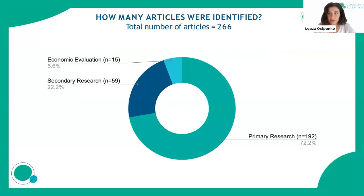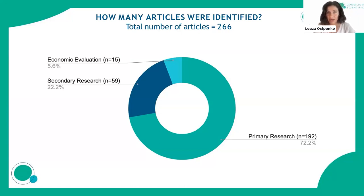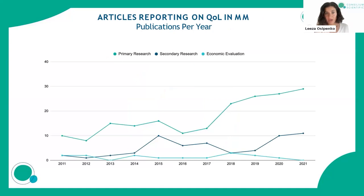In the final analysis we selected 266 articles. Primary research was the highest proportion of articles found. Some published articles started prior to 2011 but were published during our 10-year window — creating a mismatch with ongoing registry trials — but these trends are still very interesting to observe.